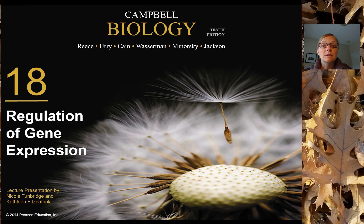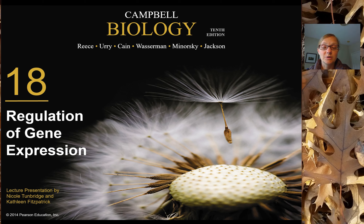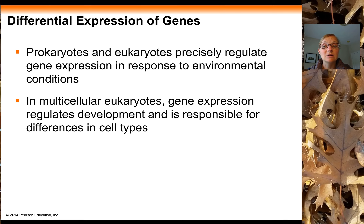That's it for Chapter 17. There's one slide from Chapter 18 to cover. Now that we understand gene expression, Chapter 18 would discuss how a cell regulates gene expression — how it ensures genes it needs are turned on and proteins produced, while genes it doesn't need are turned off. Each cell type uses only a very small fraction of the entire genome it contains in its nucleus. Both prokaryotic and eukaryotic cells can respond to their environment, and one of the main reasons is that they can precisely regulate which genes they turn on and off in response to environmental factors.